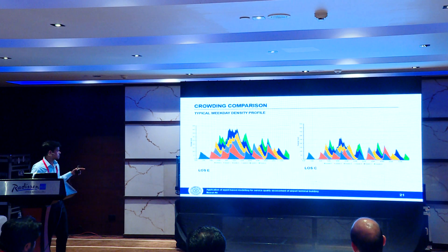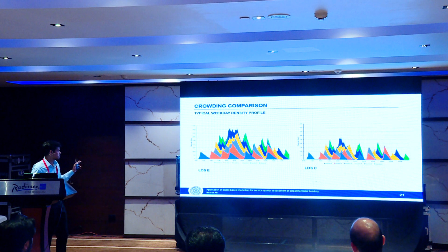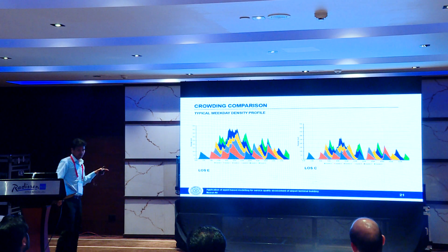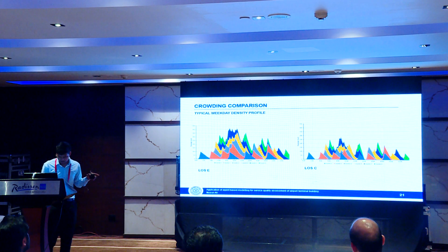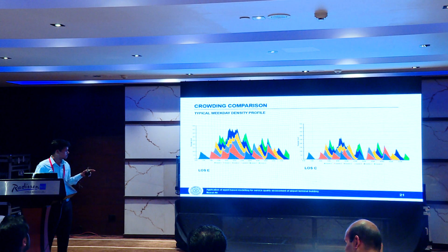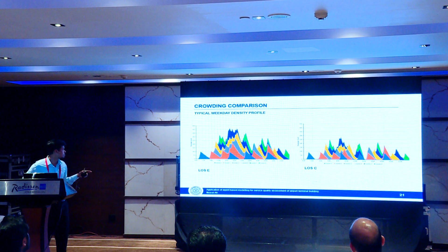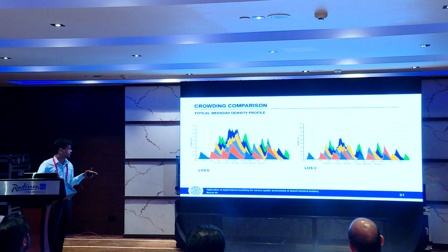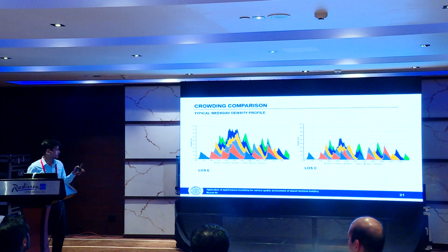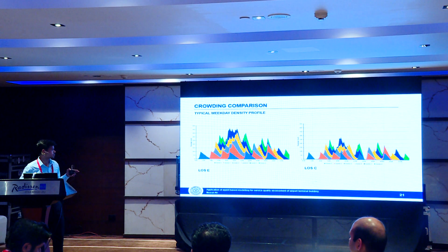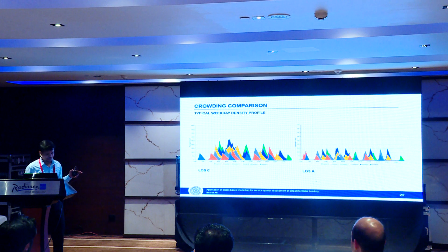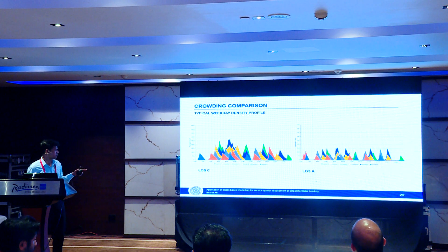This is a stack plot for level of service E and C. The maximum passenger count for level of service C goes to more than 450, for level of service E it goes to 275, and for level of service A it reaches only 150.